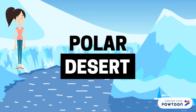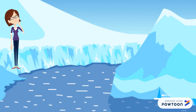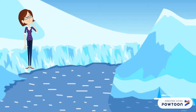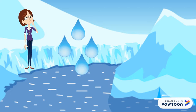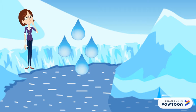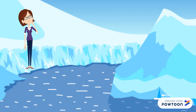Hi, we're going to talk to you about the polar desert. Polar deserts are areas in which the annual precipitation is around 15 centimeters, and the mean temperature during the warmest month is often lower than 10 degrees.